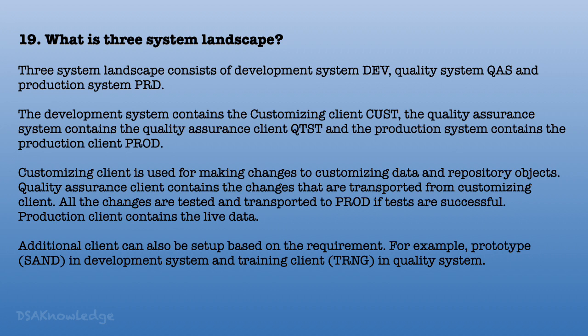What is the three-system landscape? The three-system landscape consists of a development system, quality system, and production system. The development system contains the customizing client; the quality assurance system contains the quality assurance client; and the production system contains the production client. The customizing client is used for making changes to customizing data and repository objects. Quality assurance client contains changes transported from the customizing client. All changes are tested and transported to production if tests are successful. Production client contains live data, and additional clients can be set up — for example, a prototype in the development system and a training client in the quality system.